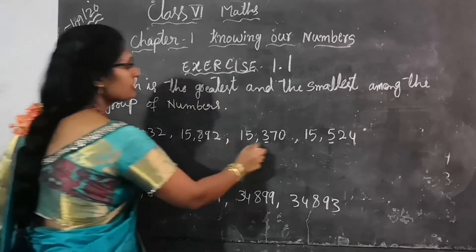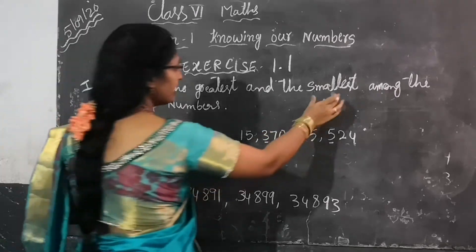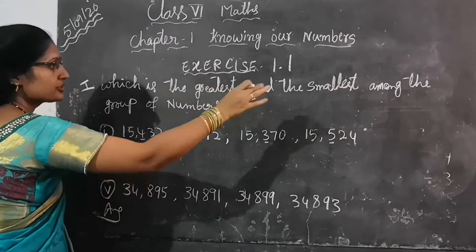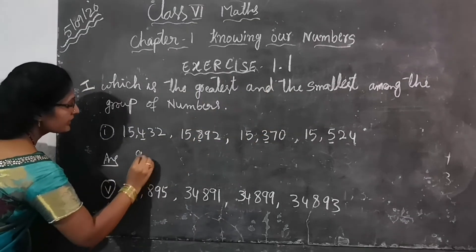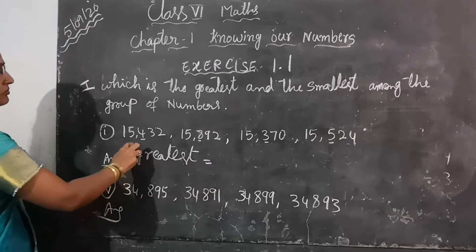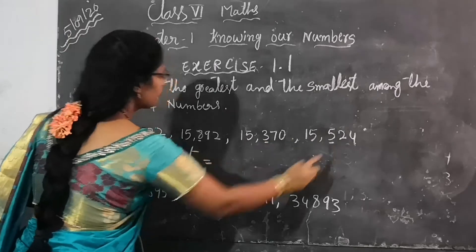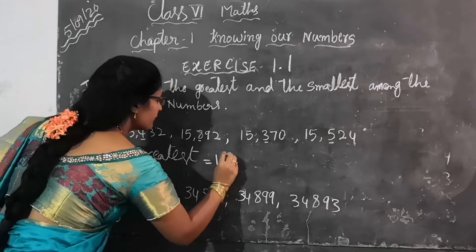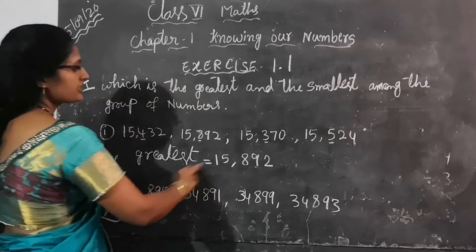In the 100's place, you get different numbers. Among these numbers, you have to find the greatest and smallest. The 100's place values are 400, 800, 300, 500. Which is greatest? 800 is the greatest. So 15,892 is the greatest number in this group.